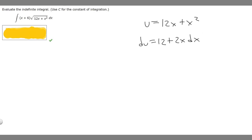Then we multiply the whole thing by dx, and now we want to solve for dx. We can divide both sides by 12 + 2x. So if you do that, you should get dx = du/(12 + 2x).